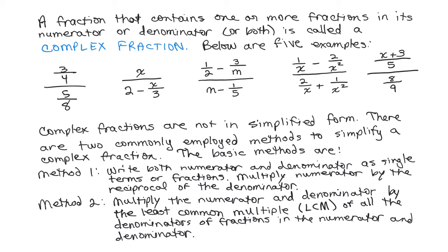The second one, there's an X alone in the numerator, but in the denominator there's two terms, 2 minus X over 3. So there's a fraction there, and you can see from the third, fourth, and fifth examples, I have fractions in both the numerator and denominator.